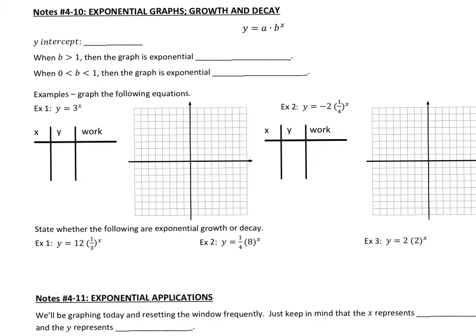Today we're going to talk about exponential graphs. When we look at exponential graphs, we talk about them either having growth or decay. Growth is when the graph is going up from left to right, and decay is when the graph is going down from left to right.